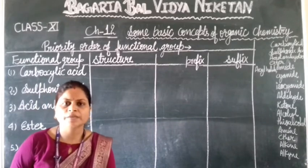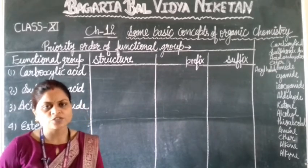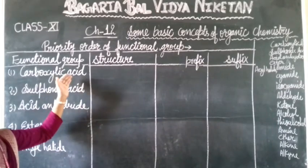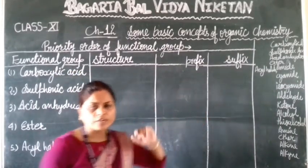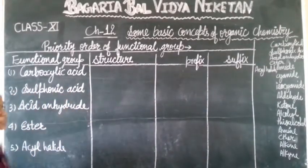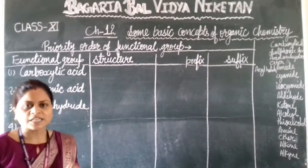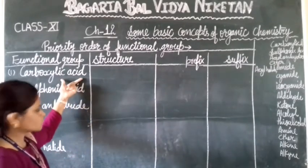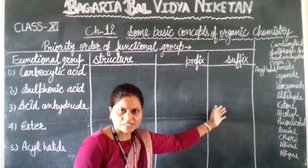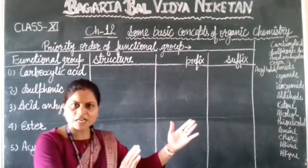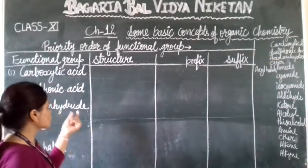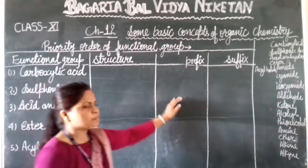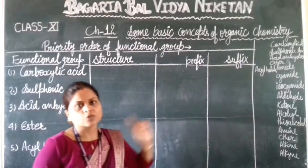The priority order means that when we do the nomenclature — which will be our next topic — we will write it using a suffix. The priority order means the sequence is fixed. We will write the nomenclature in this sequence according to the organic compound. Whichever is the senior-most functional group, we will write that as the suffix.